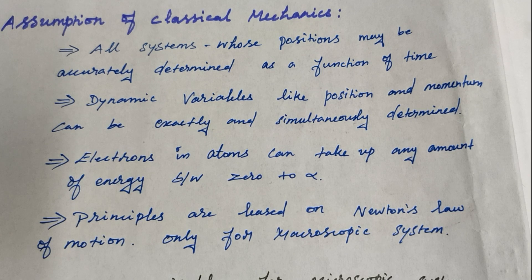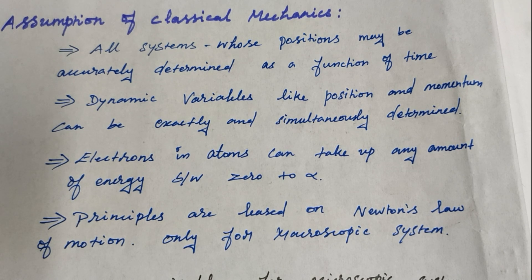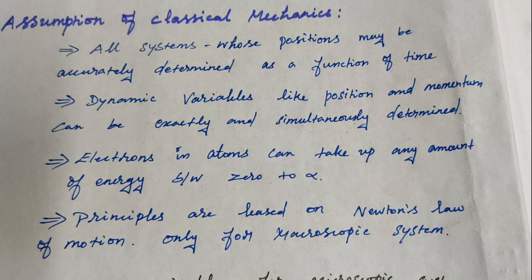In classical mechanics, electrons in atoms can take up any amount of energy between zero to infinity. But in quantum mechanics, electrons can only take up a quantum of energy — a packet or bundle of energy — expressed as E = nhν, where n is a whole number.